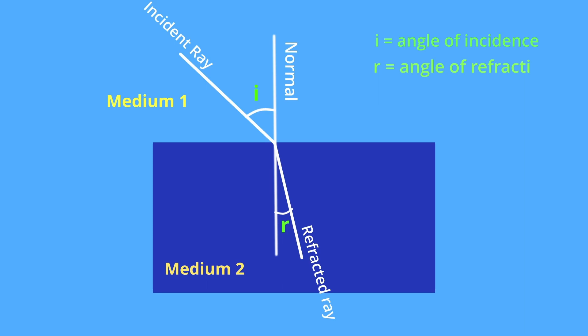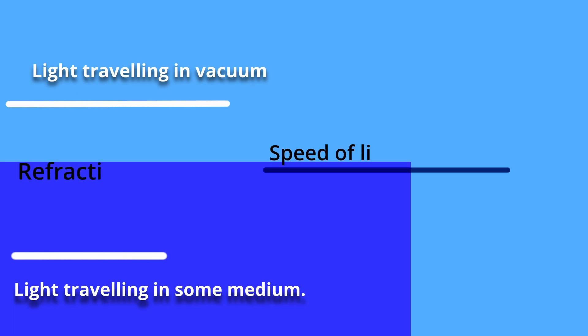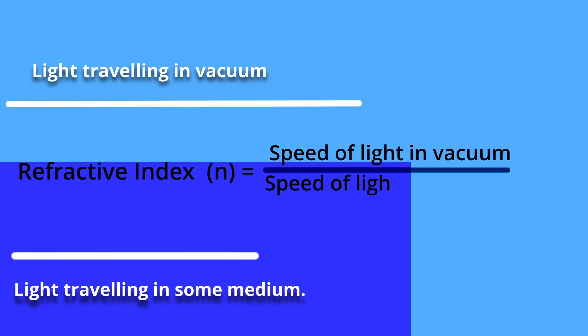The angle between the refracted ray and normal is called the angle of refraction, represented by R. Refractive index indicates the ability of bending light when it travels from one medium to another. It is a dimensionless quantity, defined as the ratio of speed of light in vacuum to speed of light in medium, represented by N.